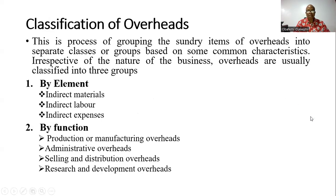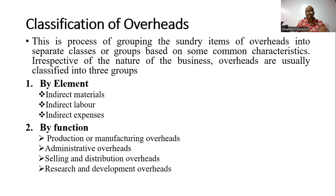So let's continue to look at classification. What does classification of overheads mean? This is a process of grouping all overheads into separate groups — separate classes — based on some common characteristics. And there are three basic ways to classify overheads. The first one is by element, the second one is by function, and the third one is by behavior. So we talk about element, function, and behavior.